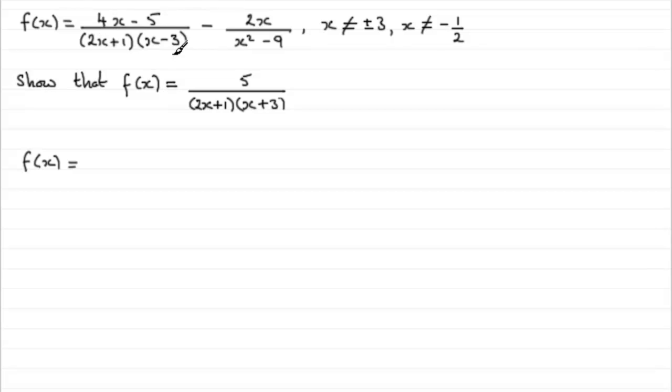Well this denominator for the first fraction is factorized so we'll just copy that one down, that's 2x plus 1, x minus 3. But for this other one x squared minus 9 we should recognize as the difference of two squares so it can be split up into two factors x plus 3 and x minus 3.